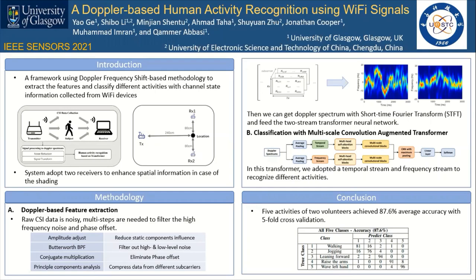After the data collection of raw data, we denoise the signal and then transfer to the Doppler spectrums using short-time Fourier transformation. We then fit the transfer-based neural network with extracted Doppler spectrums to get the recognition results.